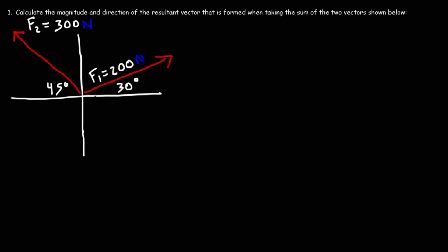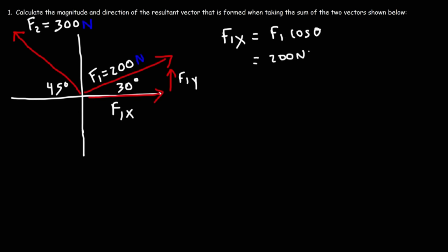We need to determine the x component and the y component of each force vector. We'll call the x component F1x and the y component F1y. F1x is going to be F1 cosine theta, so that's 200 newtons times cosine of 30 degrees. Make sure your calculator is in degree mode. Cosine 30 is equal to the square root of 3 over 2, or 0.866. Multiplying that by 200 gives us 173.2.